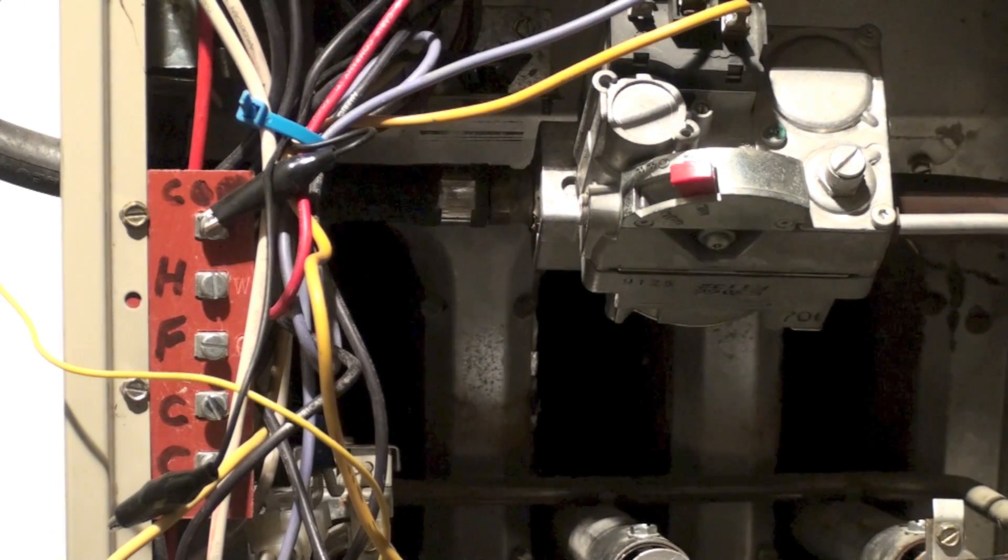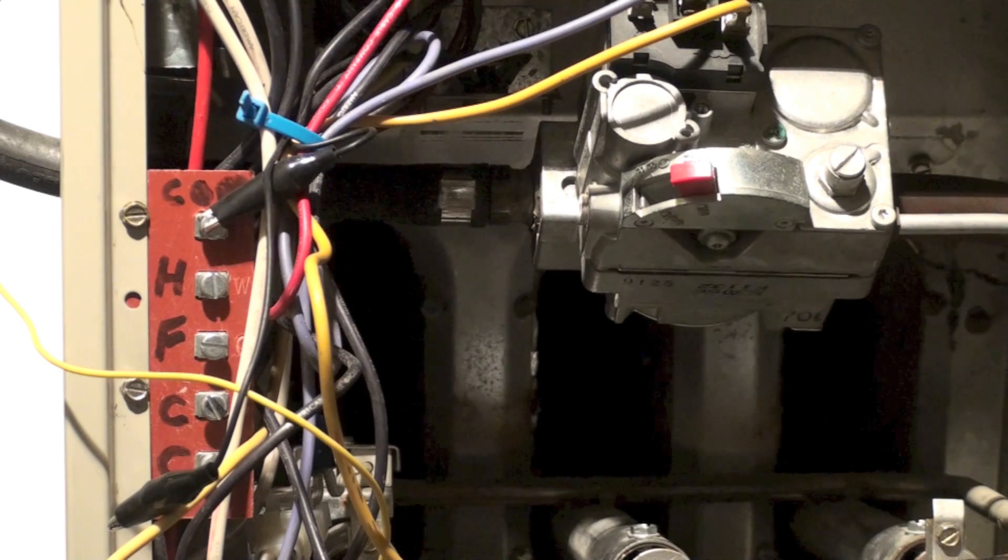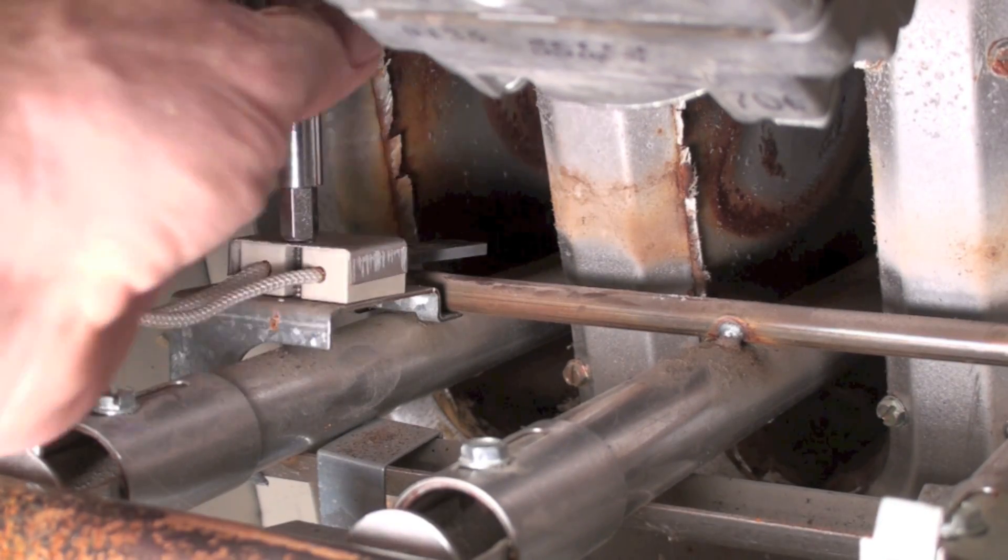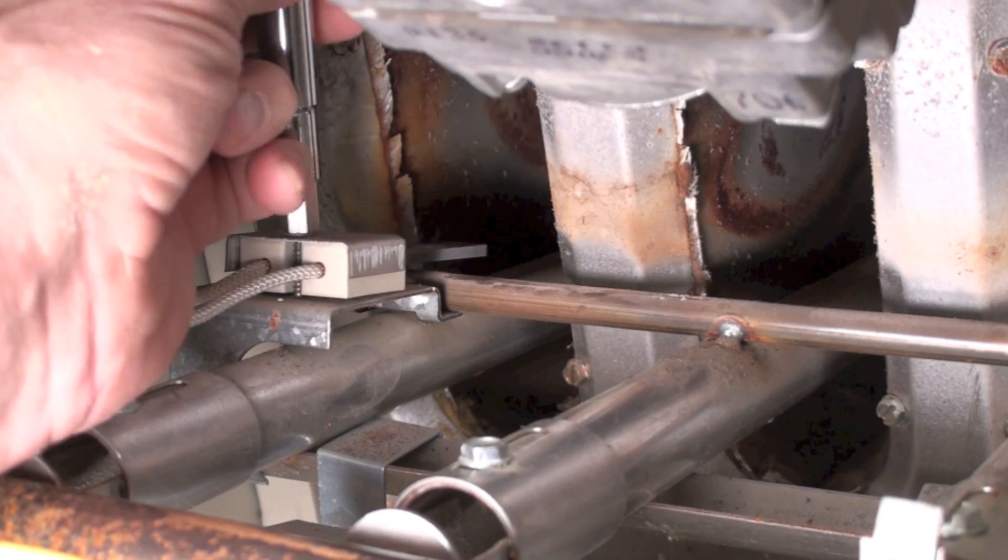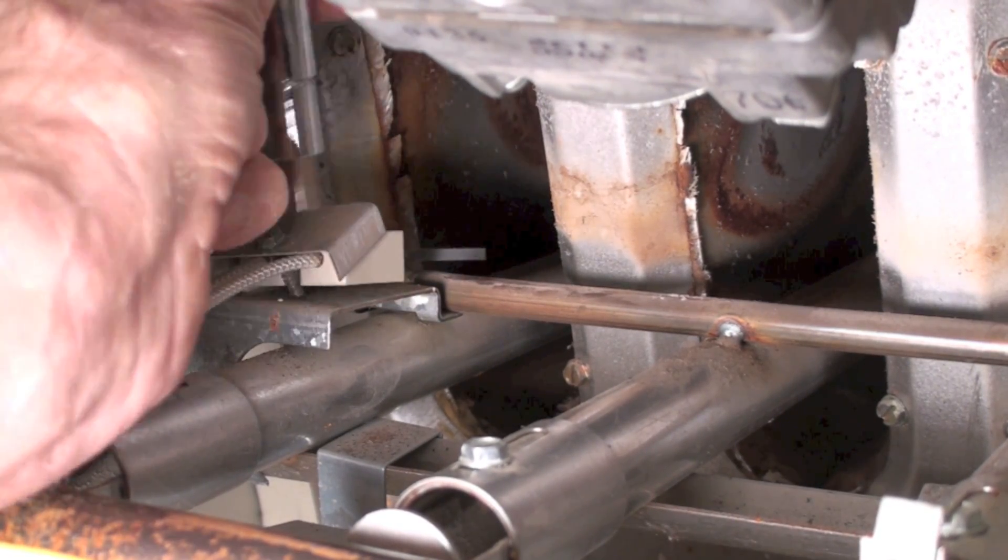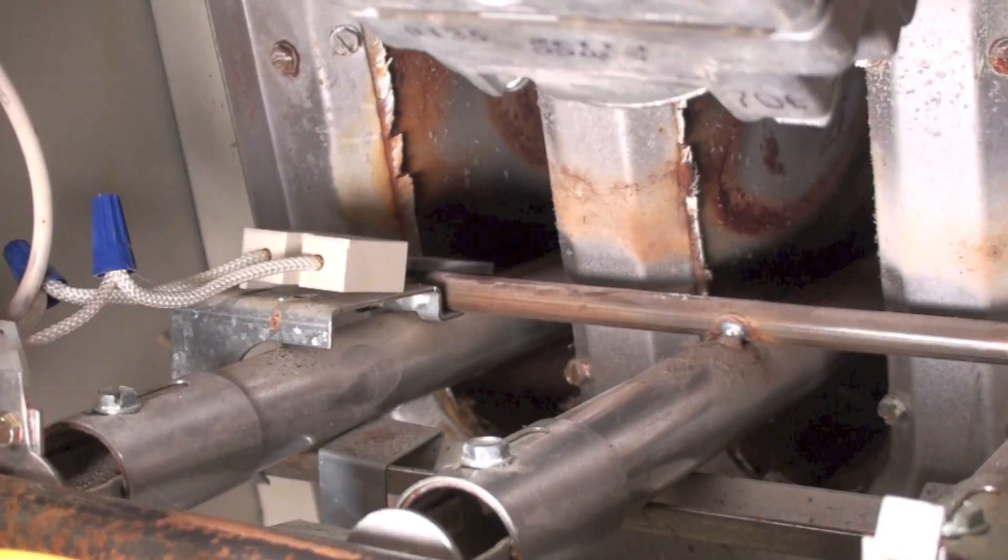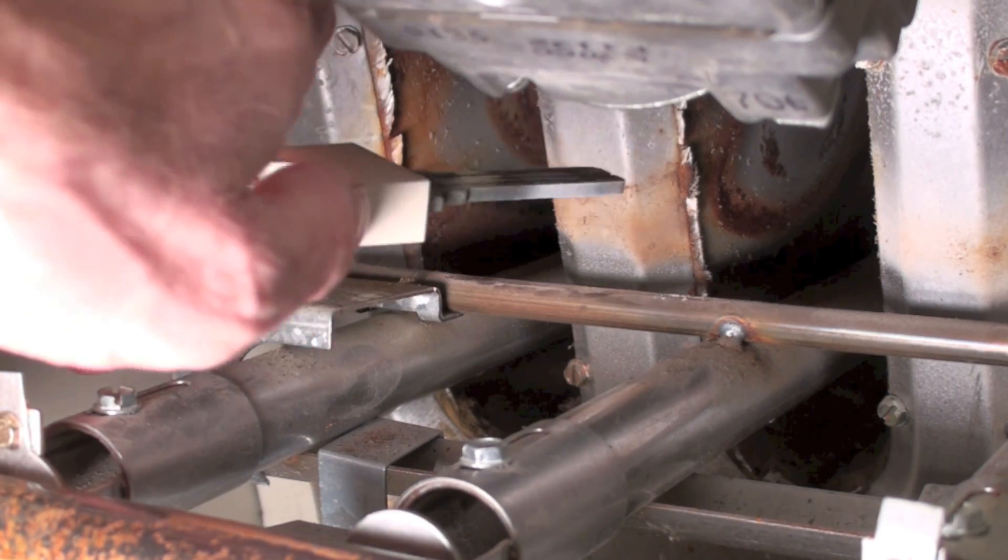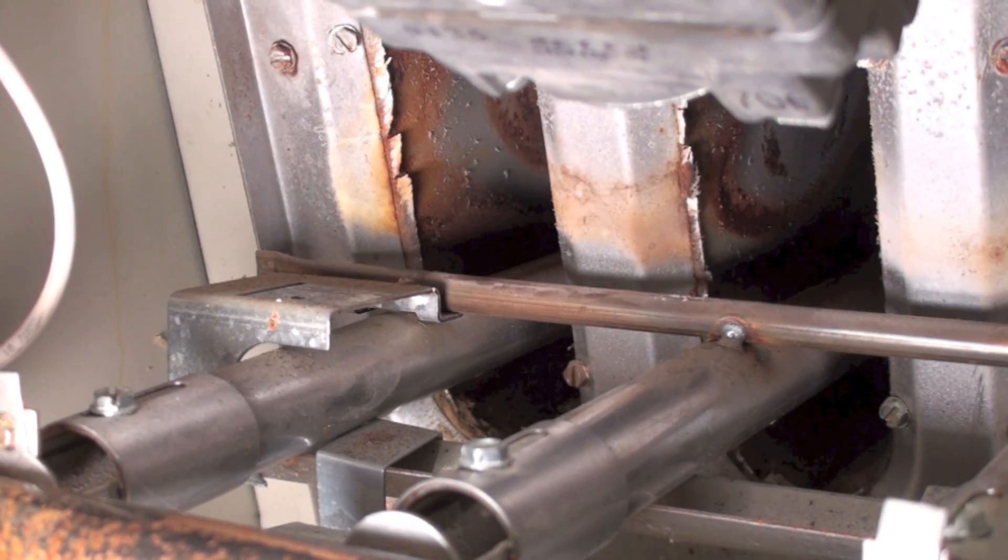That's where the hot surface igniter is. I've usually broken it taking it out, it could happen I guess. The next thing is you're going to take out the hot surface igniter. You can see right there, taking the mounting screw off, gently taking it out, lay it aside so it won't get broke.